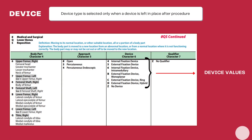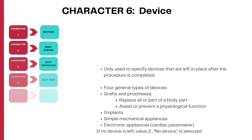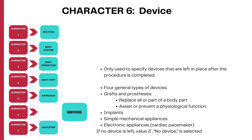This is where the device is identified in the PCS tables — you see internal fixation devices, external fixation devices, and so on. The four general types of devices are: grafts and prostheses, implants, simple mechanical appliances, and electronic appliances. These are the categories of devices identified in PCS.